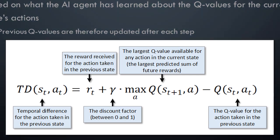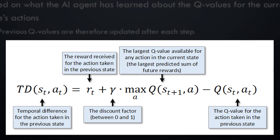The equation for calculating temporal differences may seem intimidating, but it's really not. We are calculating the temporal difference for the action taken in the previous state, and our AI agent will benefit from this information whenever it finds itself in that state again in the future. The temporal difference includes the reward that was received for the action taken in the previous state — importantly, this is the immediate reward. This is very different from the Q values, which represent our current estimates of the sum of all future rewards if we were to take a particular action in a particular state.